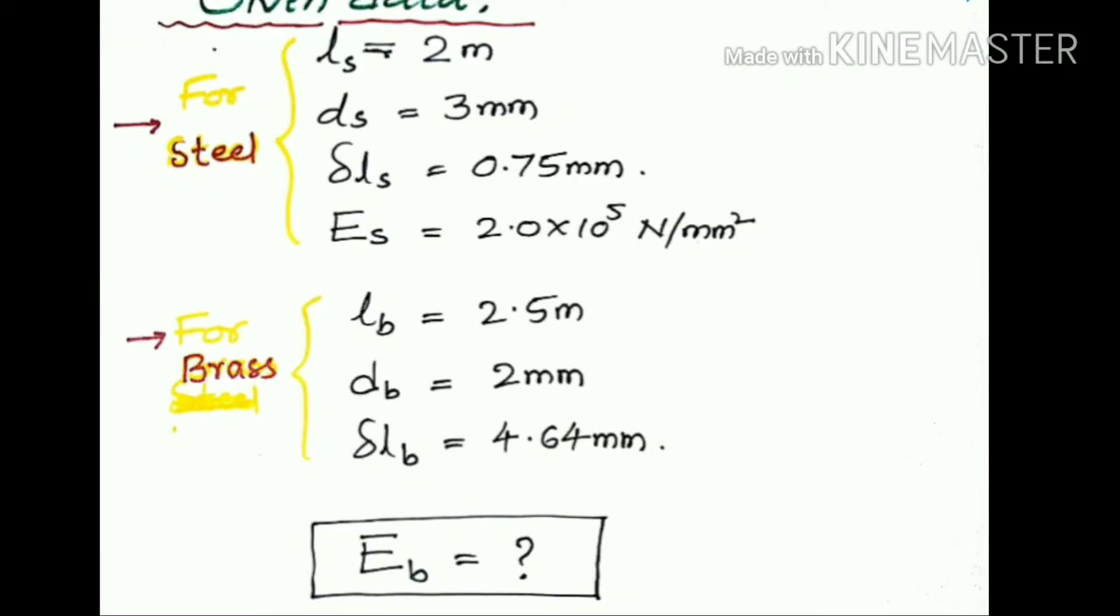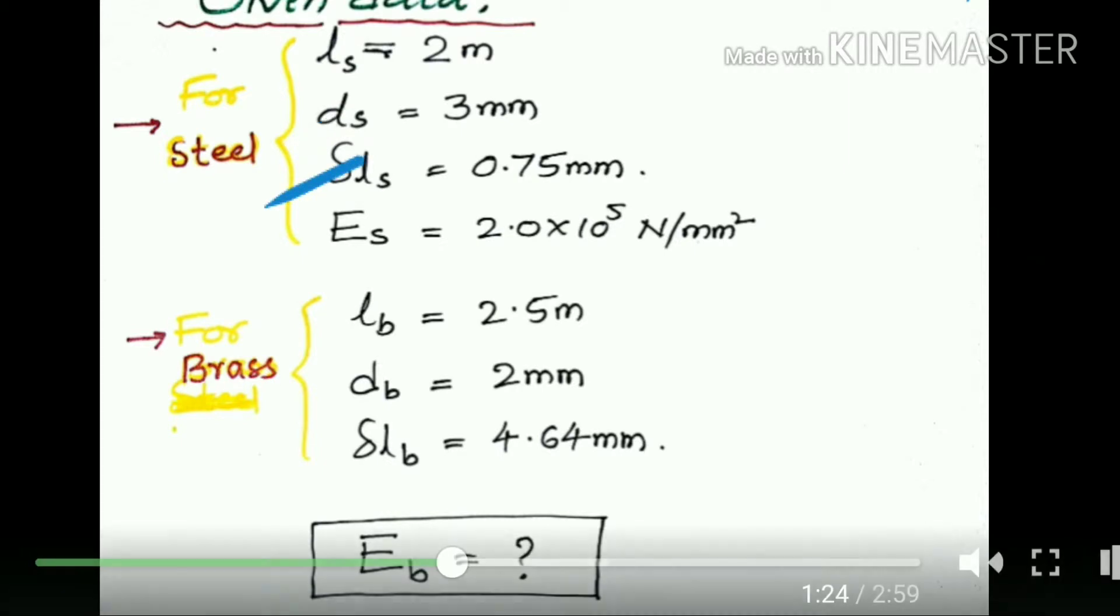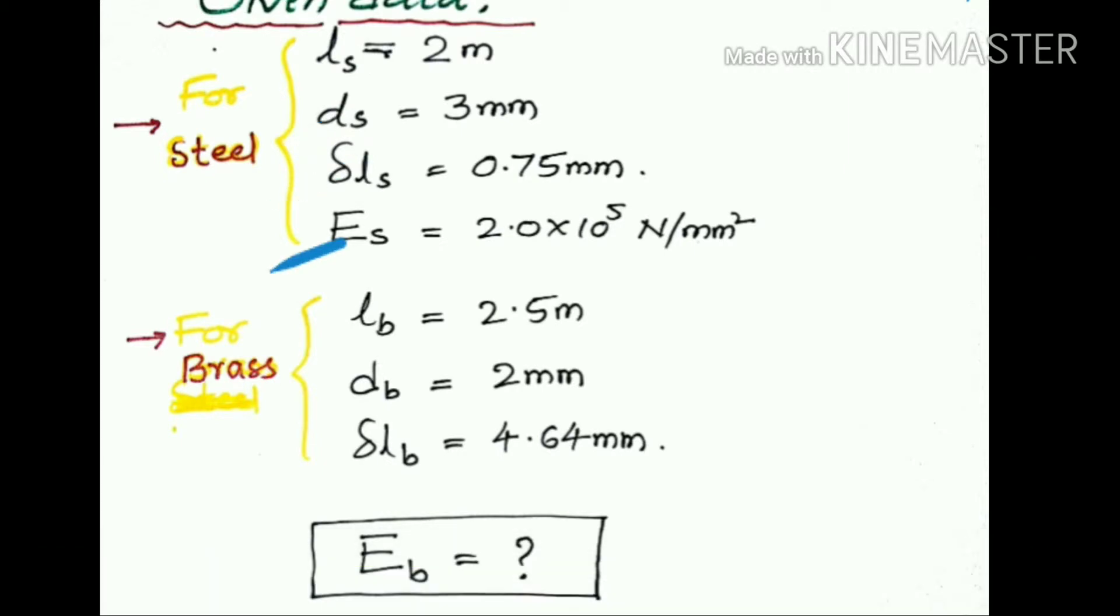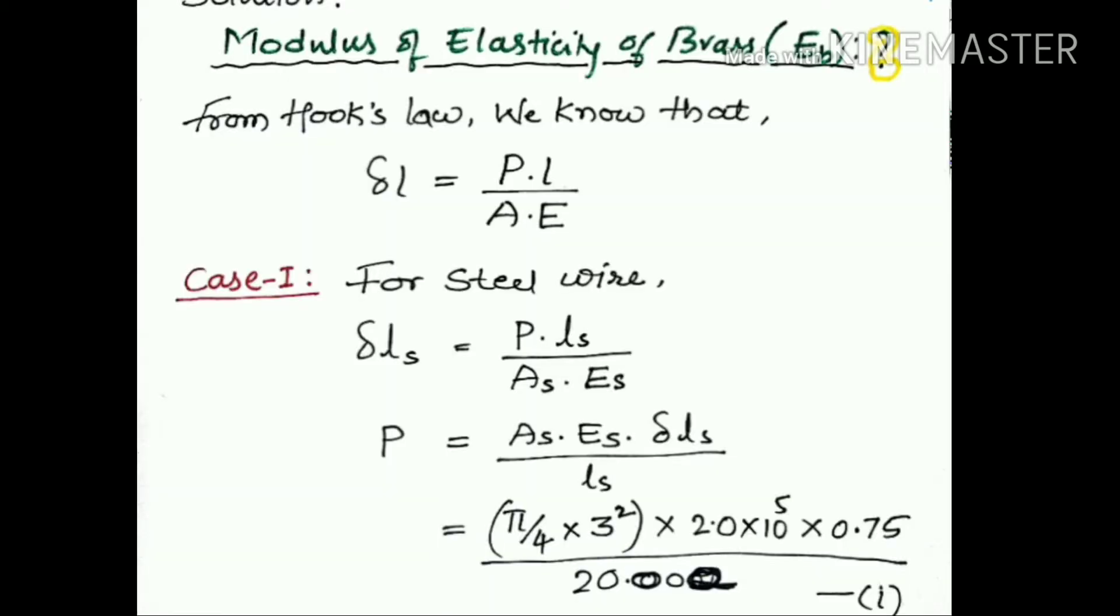Let us take the given data. For the steel material we have Ls, ds, δLs and Young's modulus Es. For the brass we have the same dimensions except we don't have the Young's modulus. We have to calculate the Young's modulus for the brass material.